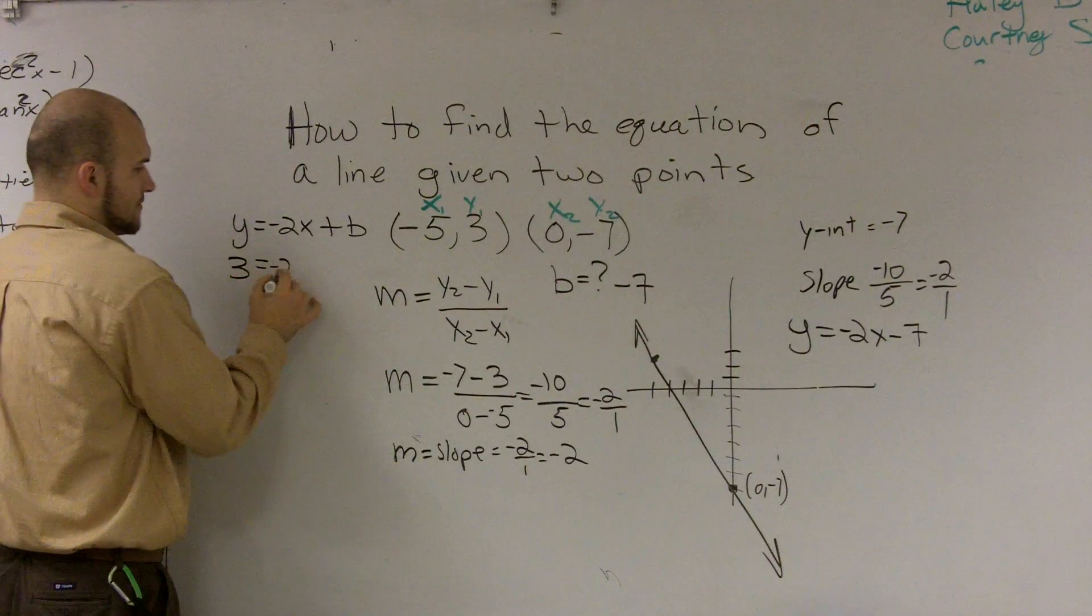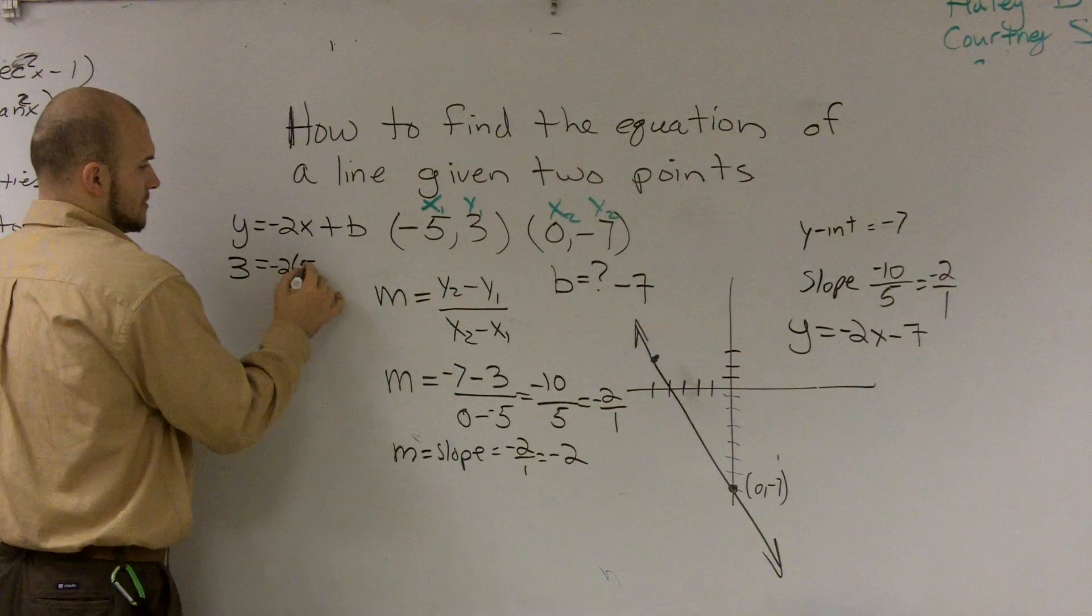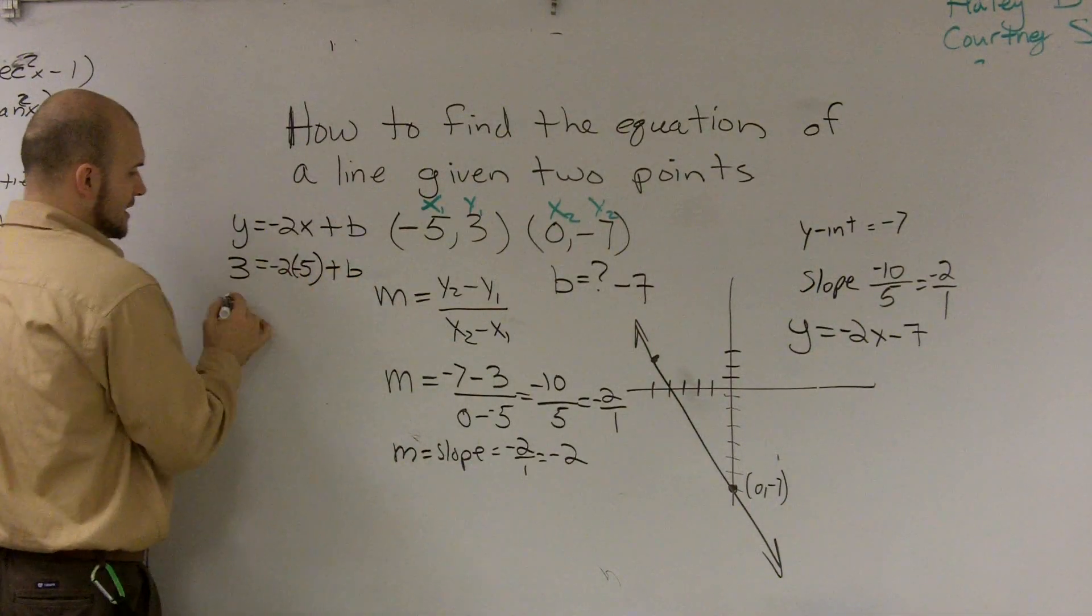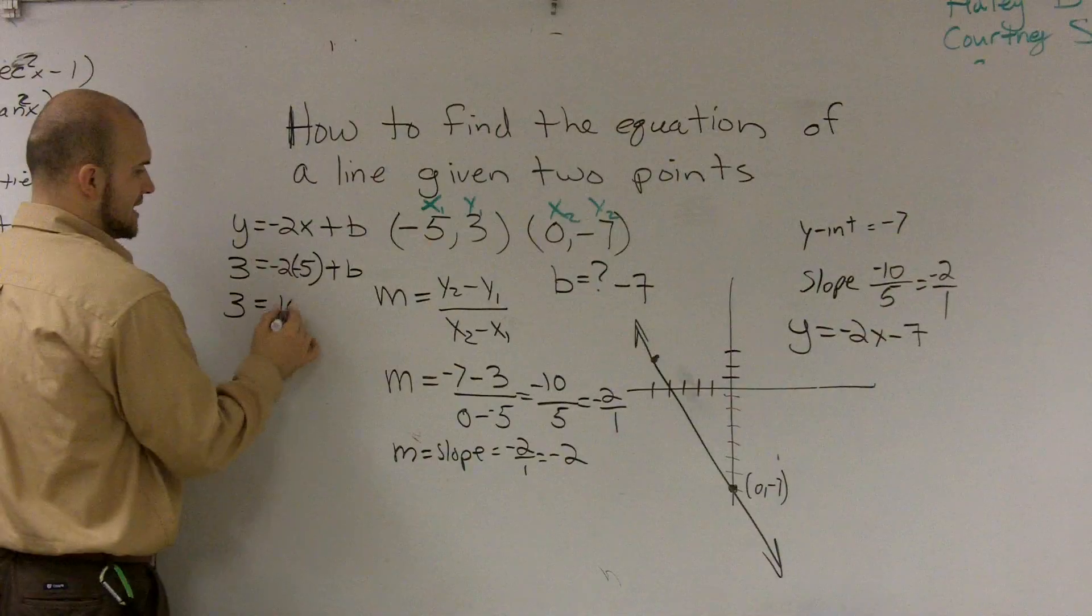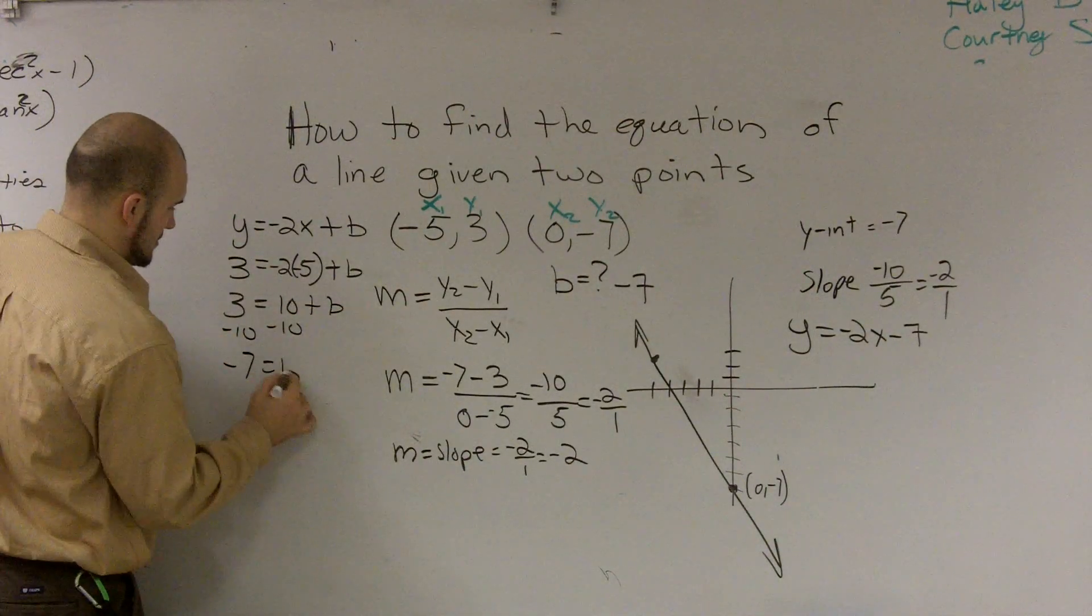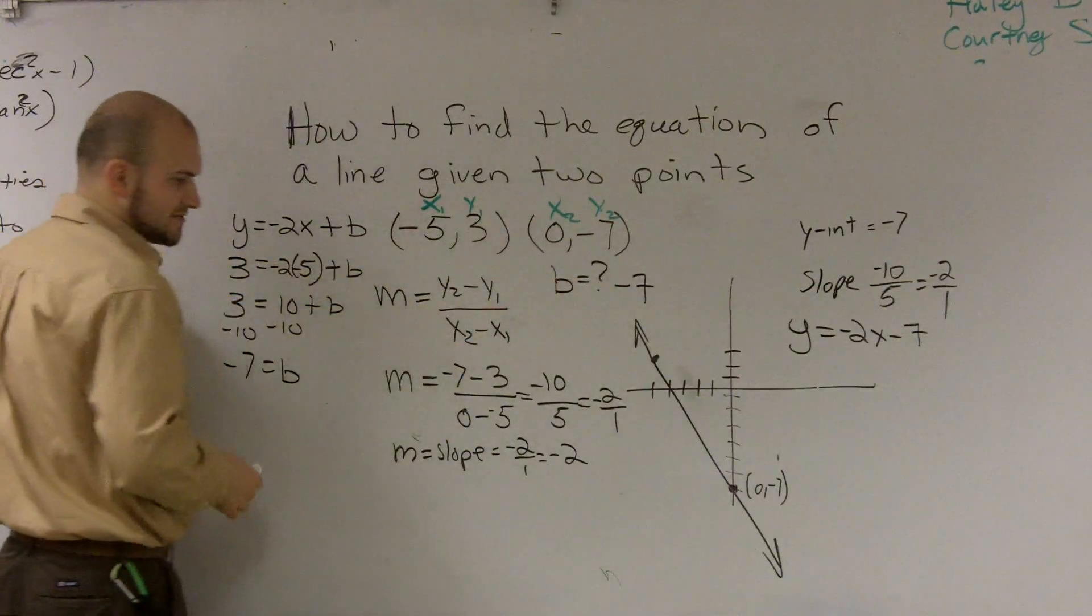So I'll use a point, and I'll use that point to give me, which confirms that b equals negative 7.